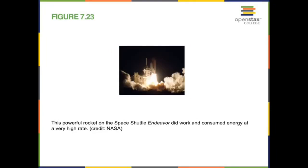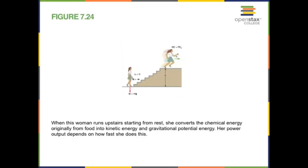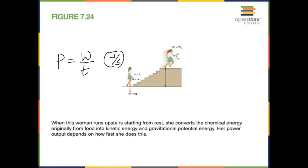Finally in this chapter, we have the concept of power. Power depends on how fast you can do work, and the formula for power is work over time. This woman is running upstairs — if she runs fast, she uses more power. If she takes more time to do the same work, her power is less. The unit of work is joule and time is second, so the unit of power is joule per second, which is the Watt, with symbol W.